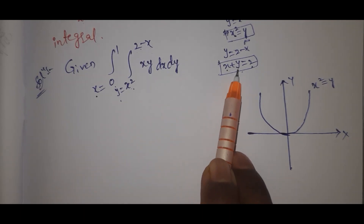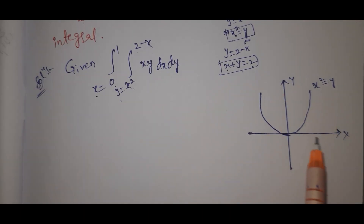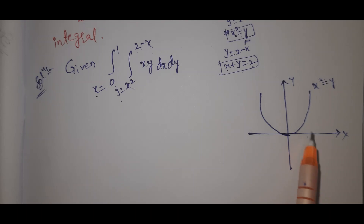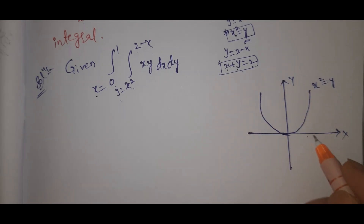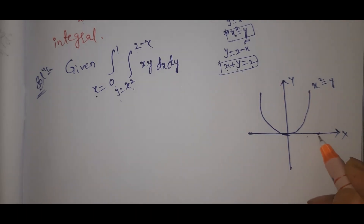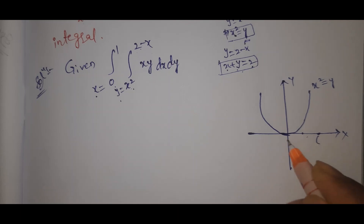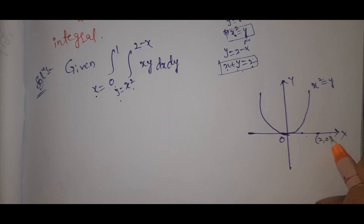On the x-axis, y equals 0. Setting y equal to 0 in x plus y equals 2 gives x equals 2, so the point is (2, 0). The origin point is also marked. This is point (2, 0).